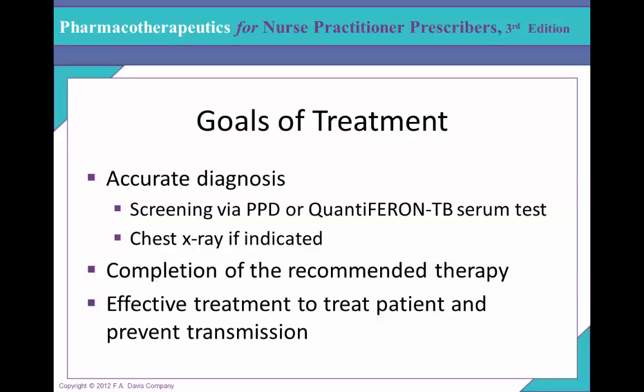Sputum testing is the mainstay of diagnosis. If patients cannot produce sputum, you can use aerosolized hypertonic saline to induce sputum, or do bronchoscopy with bronchial washing, which is particularly sensitive. Note that bronchoscopy exposes medical staff to increased infection risk. The first step is typically microscopic examination to check for acid-fast bacilli, followed by drug susceptibility testing, QuantiFERON tests, and transbronchial biopsies.